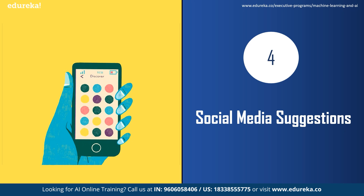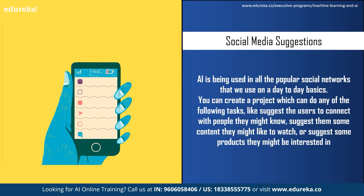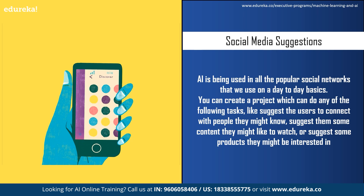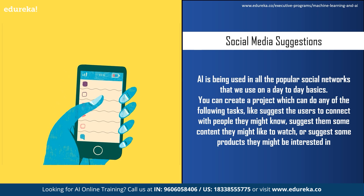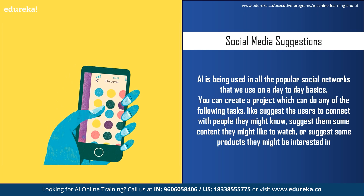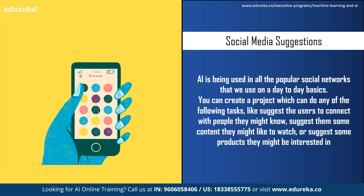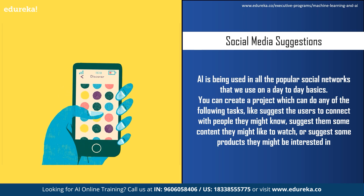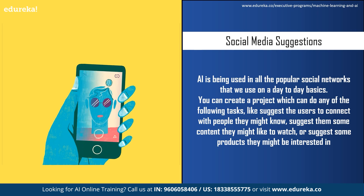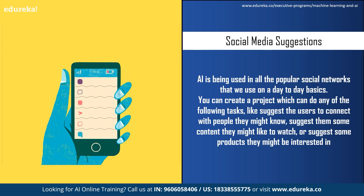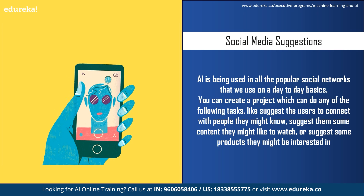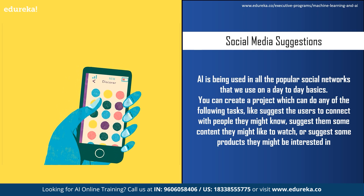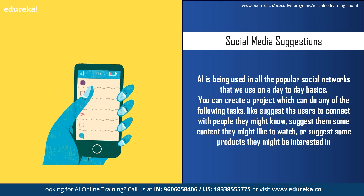The fourth AI project idea is social media suggestions. Artificial intelligence is used in all popular social media networks. For example, Facebook uses AI and advanced machine learning to serve content based on your preferences, recognize faces in photos for tagging, and target users for relevant advertisements. Instagram uses AI to identify visuals, and LinkedIn uses AI to offer job recommendations based on your qualifications and interests, and suggest people to connect with.